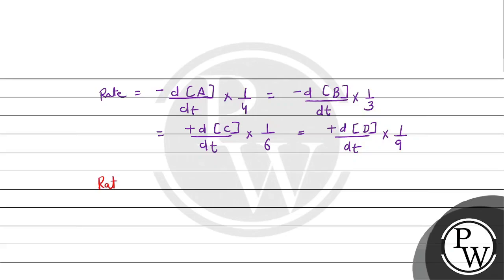So we can write rate of reaction as +d[C]/dt × 1/6, and rate of appearance of C given to us is 6 × 10^-2 mol/L/s × 1/6. Solving this we get 10^-2 mol/L/s. Let's label this as equation 1.